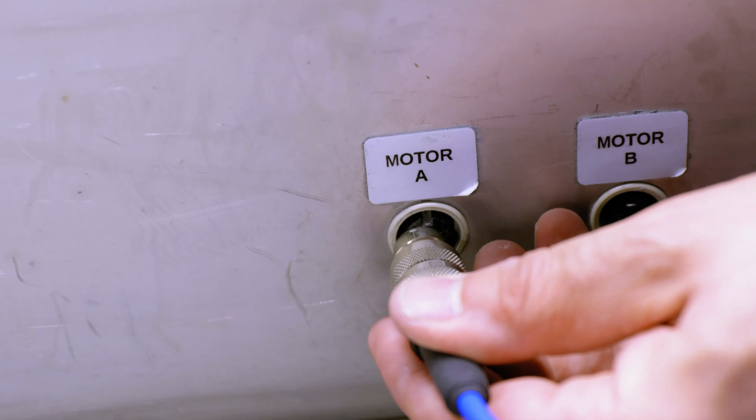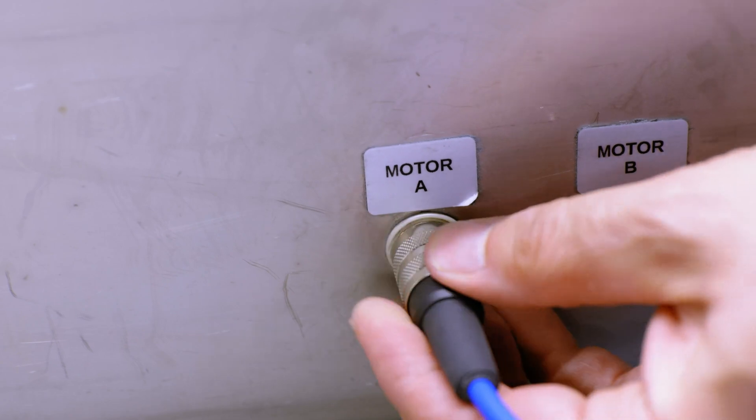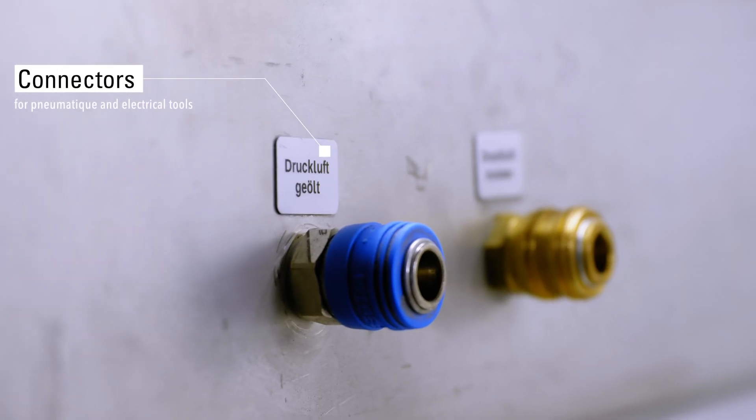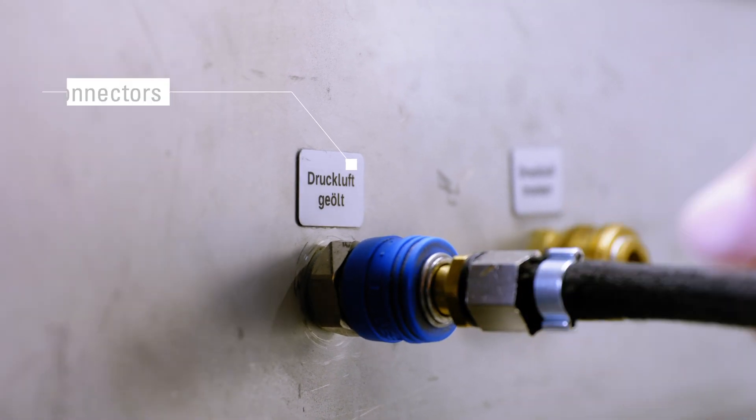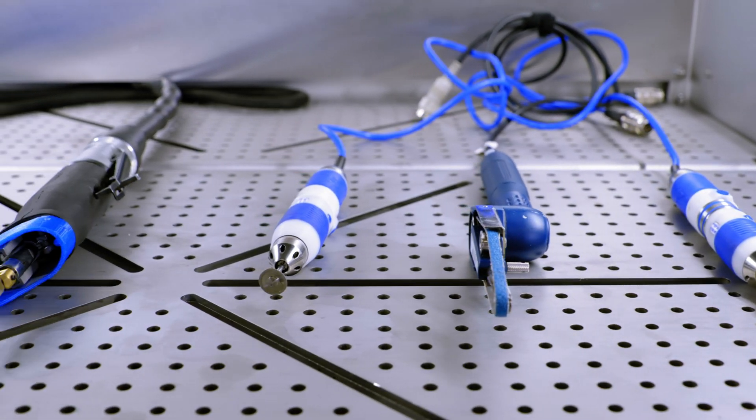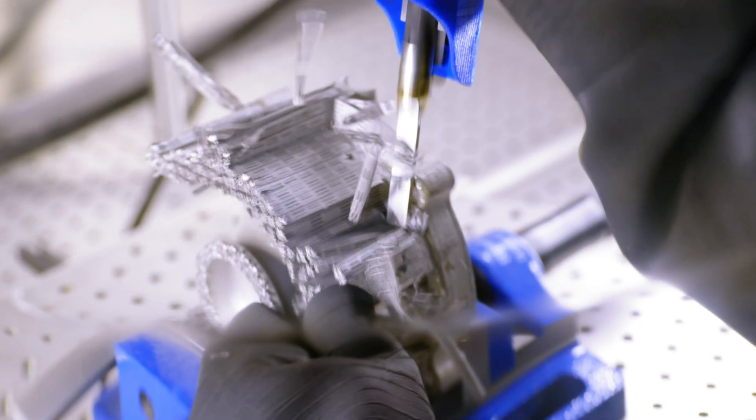For the various post-processing stages, the station offers connection options for electric micro motor and pneumatic systems. One can therefore make use of a wide range of devices and tools, whether hammer, chisel, saw, or grinder.